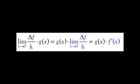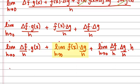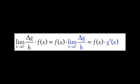For the first term, we can pull g of x out since it's not the variable we're taking the limit with respect to. The limit as h approaches 0 of delta f over h is f prime of x, so the first term gives g of x times f prime of x. For the second term, by the same logic, we pull out f of x, and the limit as h approaches 0 of delta g over h is g prime of x. So the second term gives f of x times g prime of x.